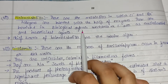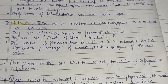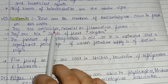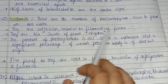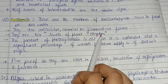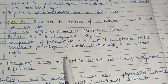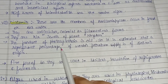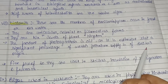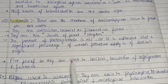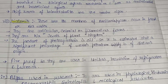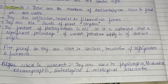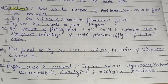Diatoms occur in fresh or sea water and are unicellular, colonial, or filamentous. They are known as 'jewels of the plant kingdom' due to their varied shapes. The product of photosynthesis in diatoms is oil, and a significant percentage of the world's petroleum supply is of diatom origin. Diatomite is fireproof and used in boilers and insulation of refrigerators and furnaces. Algae are also used in physiological, biochemical, oceanographic, limnological, and oncological research.